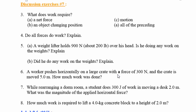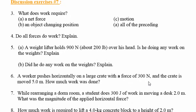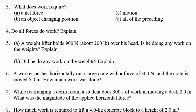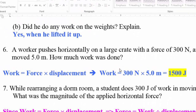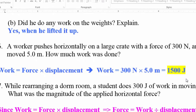Question six: a worker pushes horizontally on a large crate with a force of 300 Newtons and the crate moves five meters — how much work was done? To find the work in joules, multiply the force (300 Newtons) by the distance (5 meters), which yields 1,500 joules.